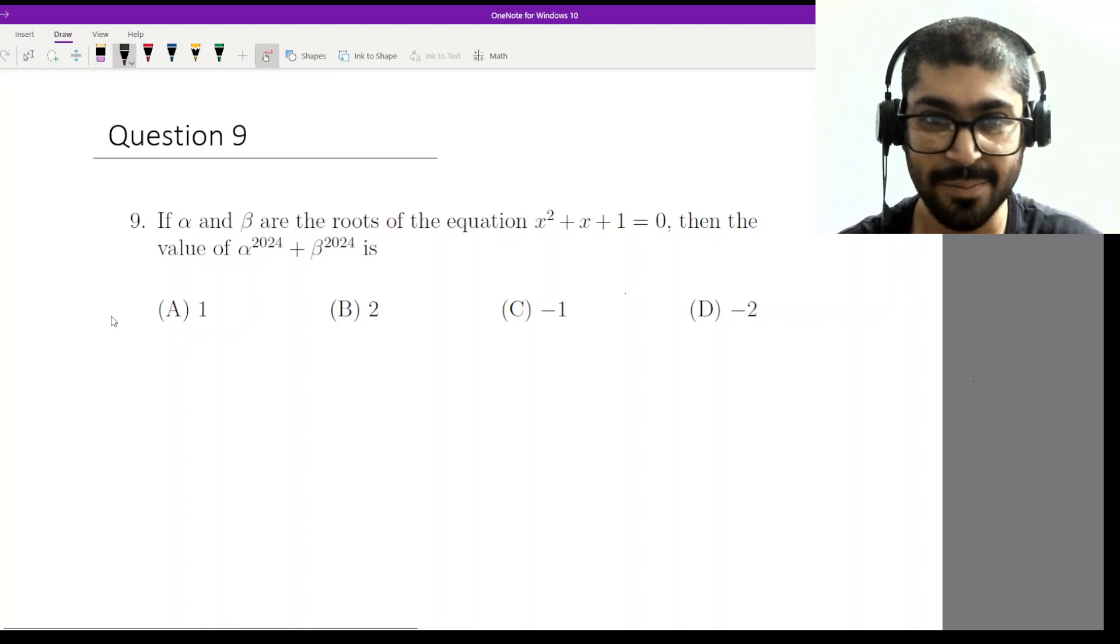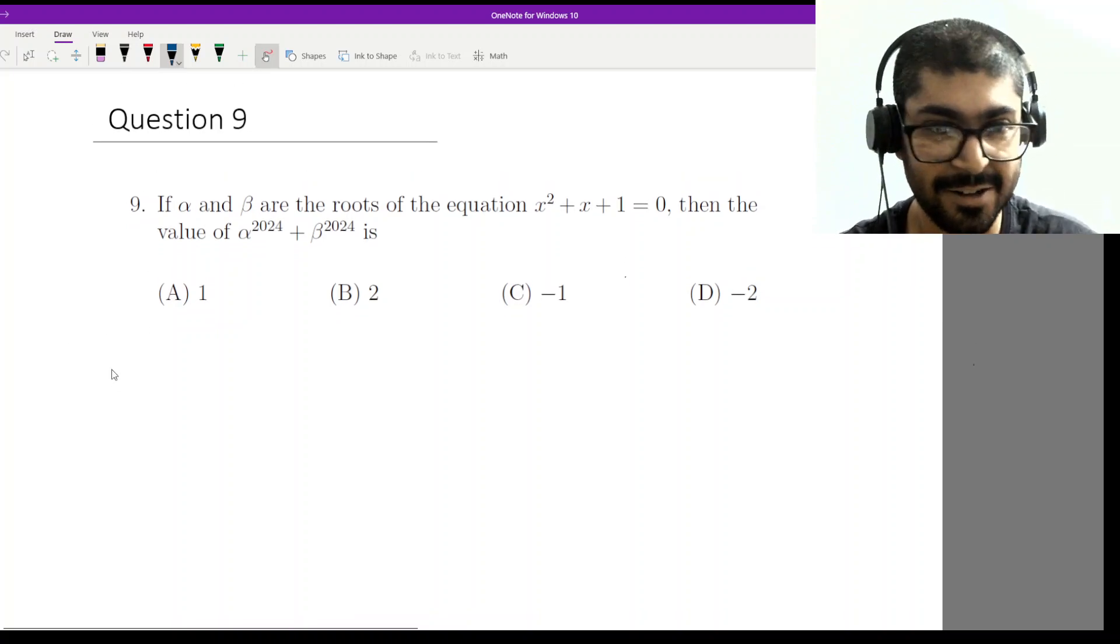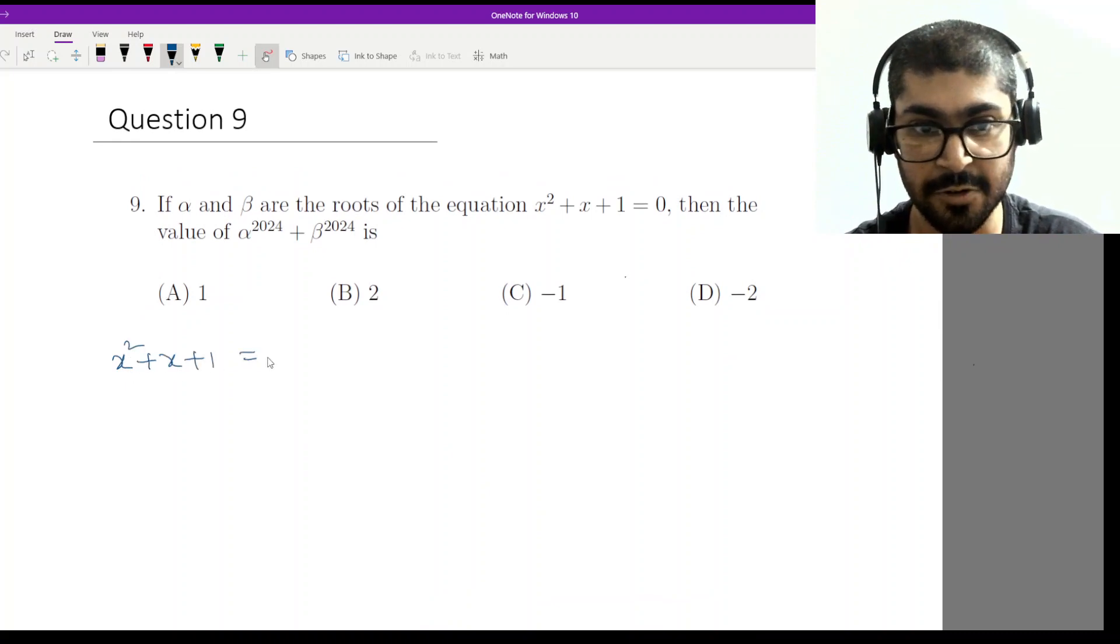Alright, now this sum might look like a sum on quadratic equations, but actually it's not. It's a sum on complex numbers. So what is the equation given? Let us look into that first. It's x squared plus x plus 1 equal to 0.